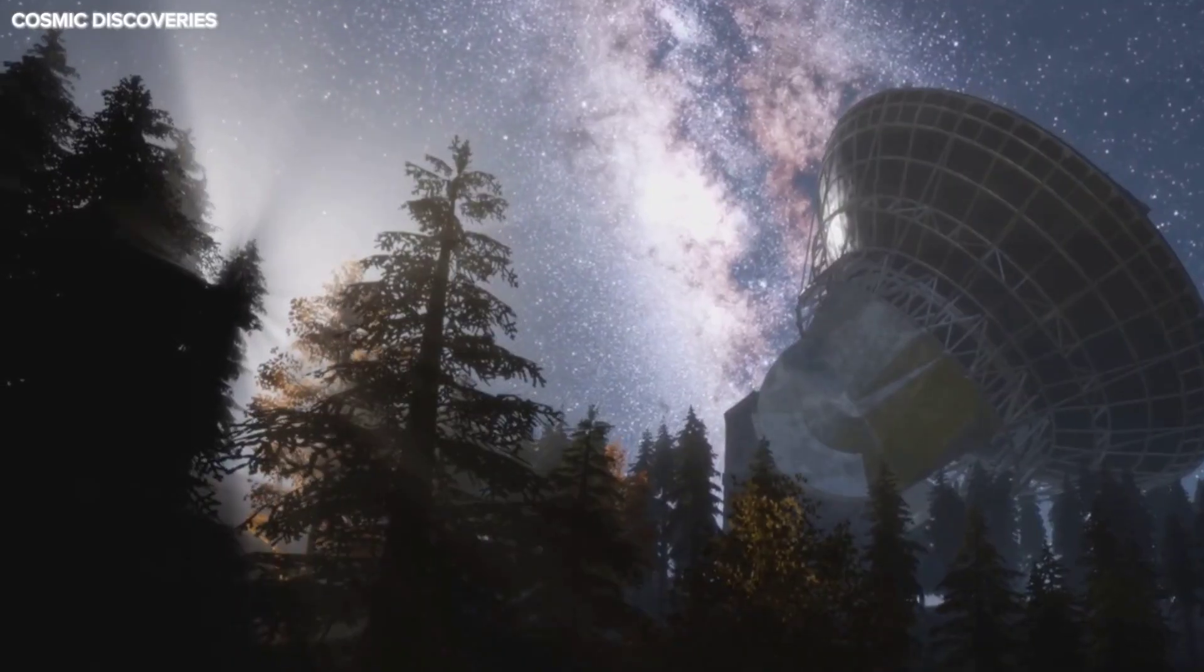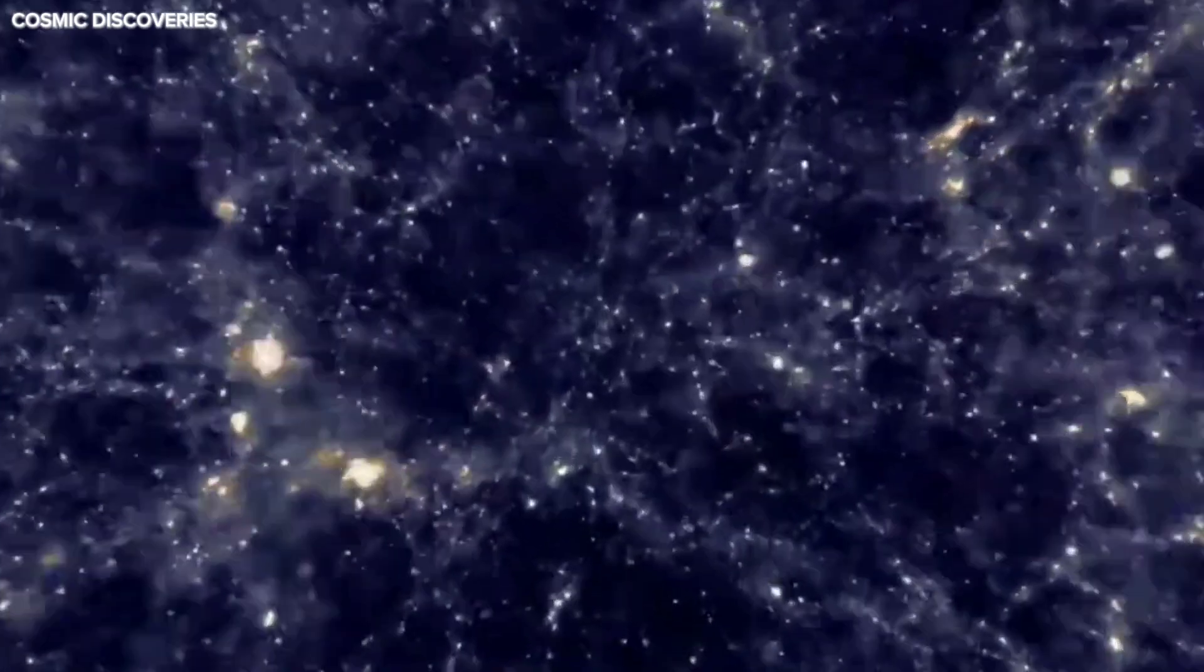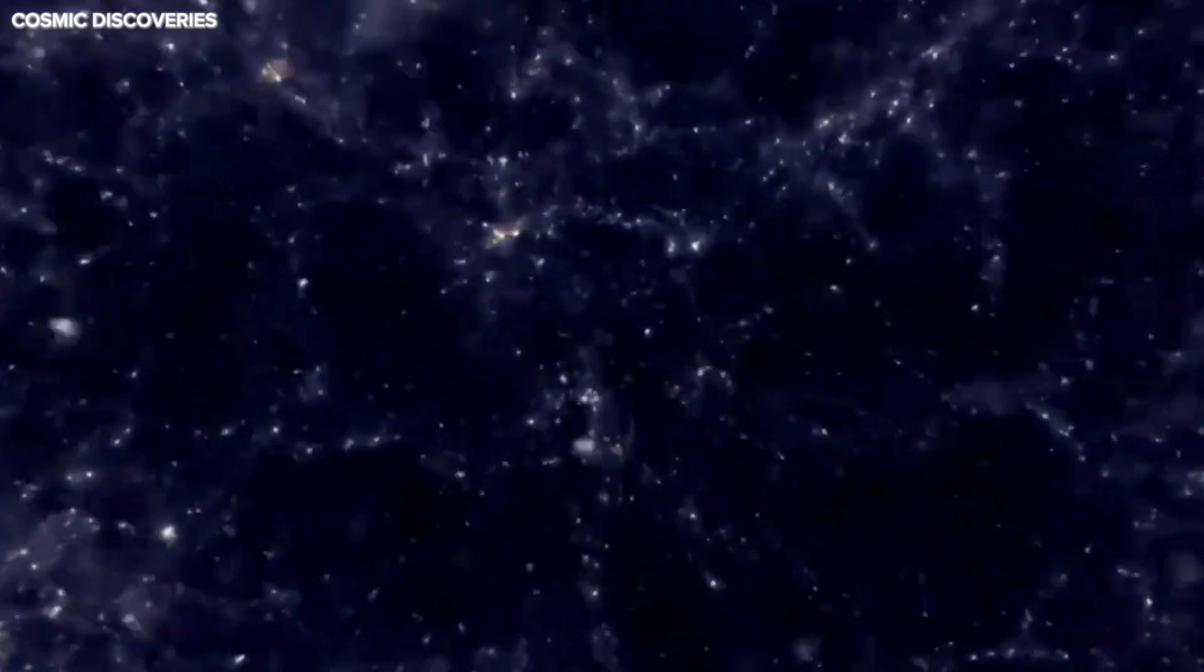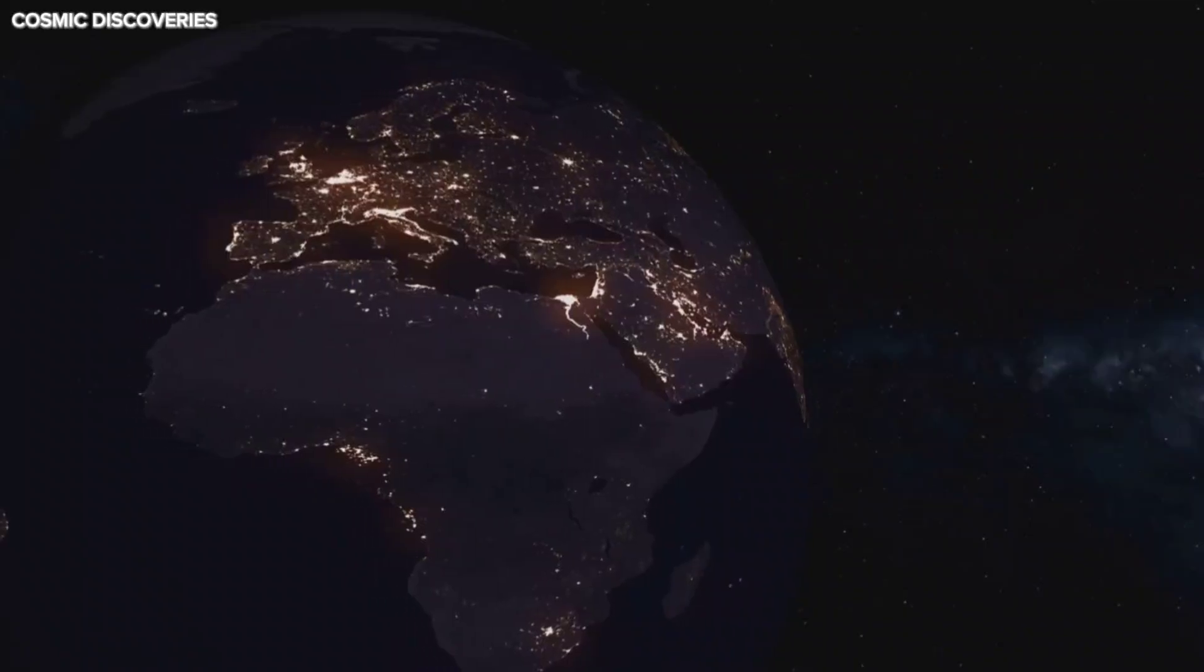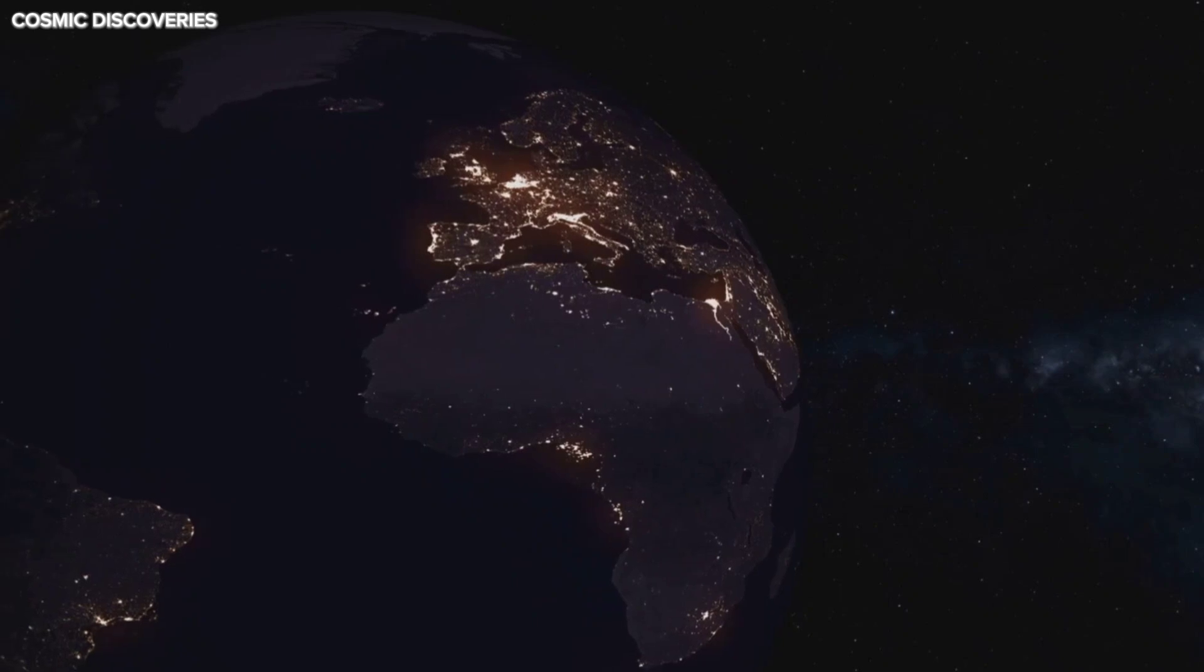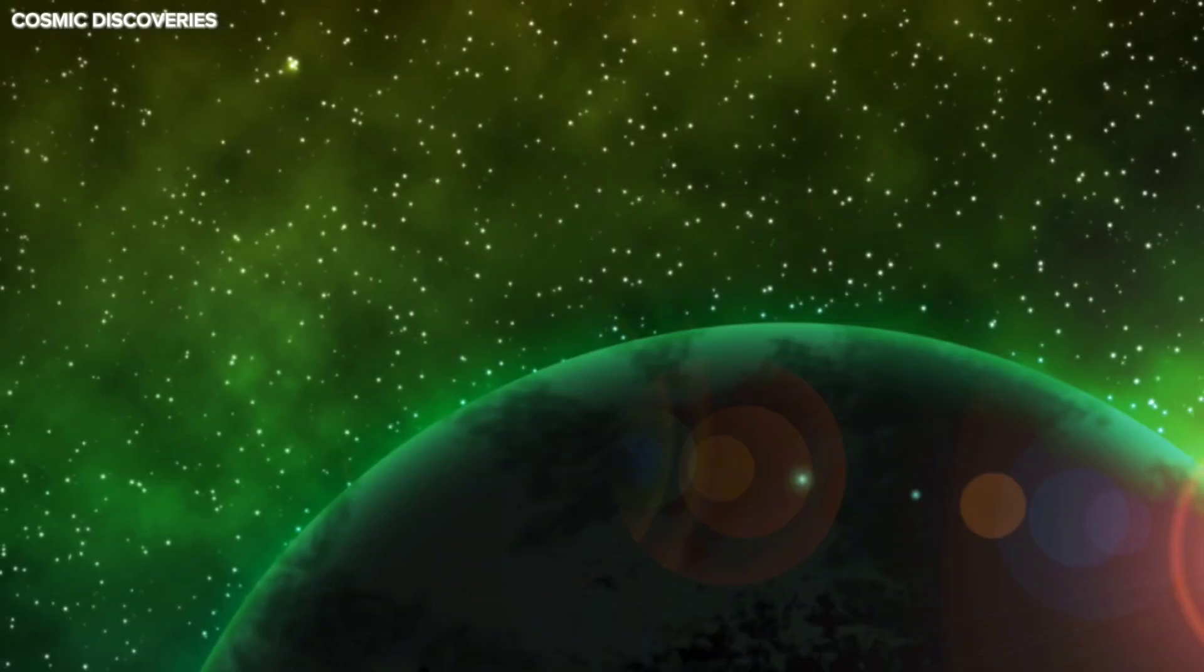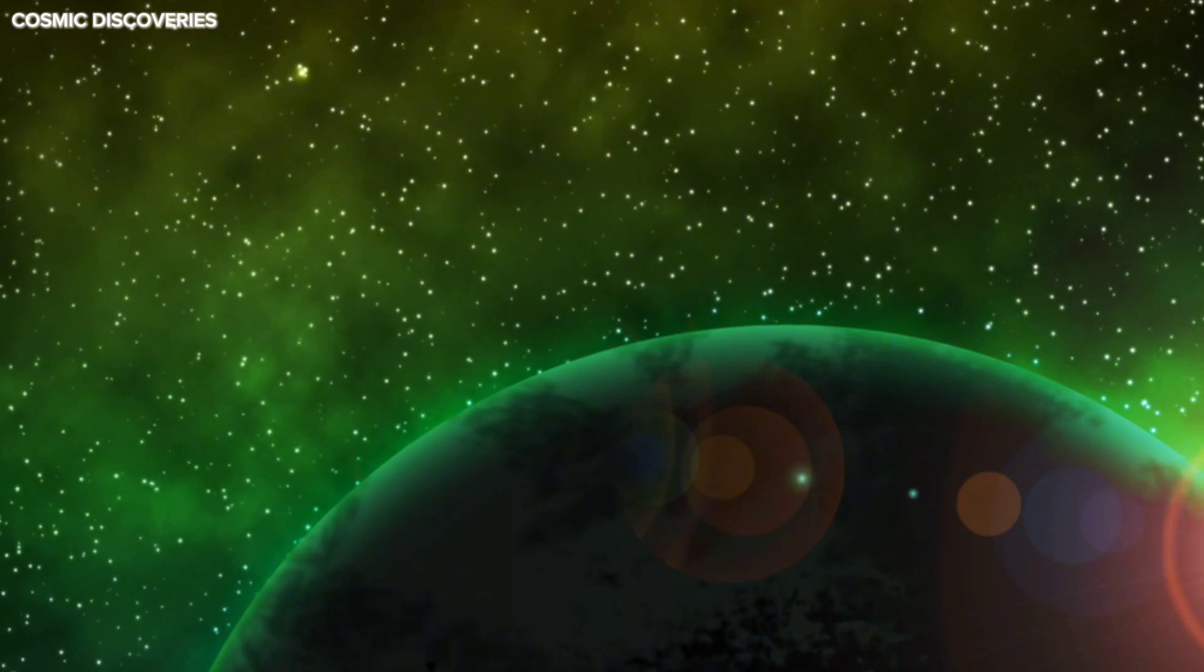Discovered in 2016, it's a rocky exoplanet orbiting Proxima Centauri, a small red dwarf in the Alpha Centauri system, our closest stellar neighbor. At just over four light years away, it's like seeing a light in your neighbor's window, cosmically speaking. Proxima b is slightly more massive than Earth and orbits its star every eleven days, placing it in the habitable zone where liquid water could exist.